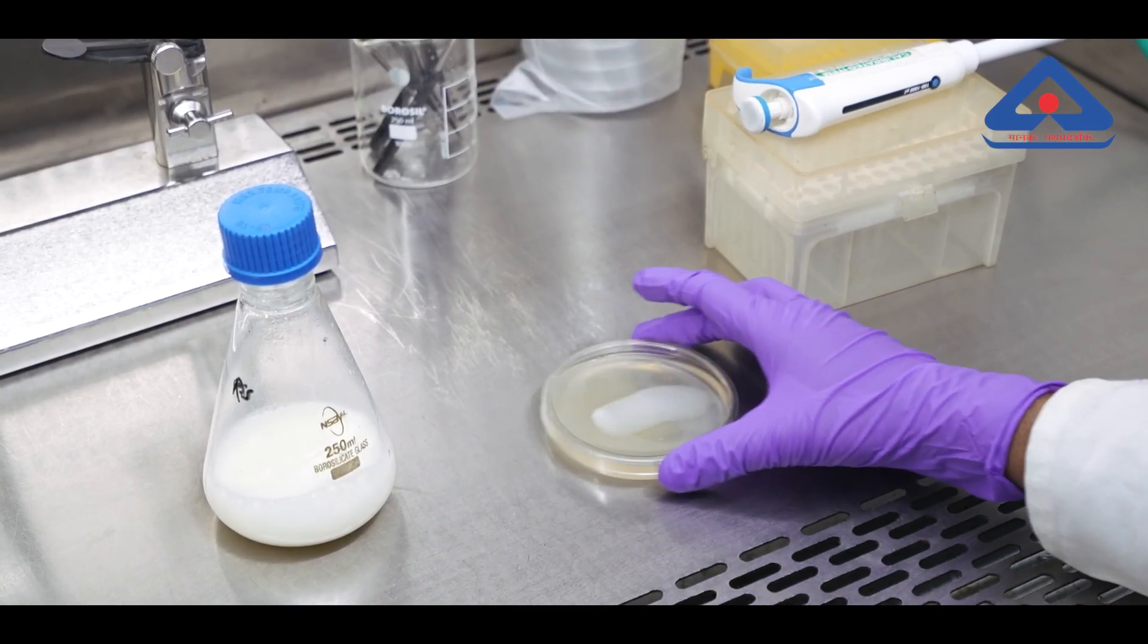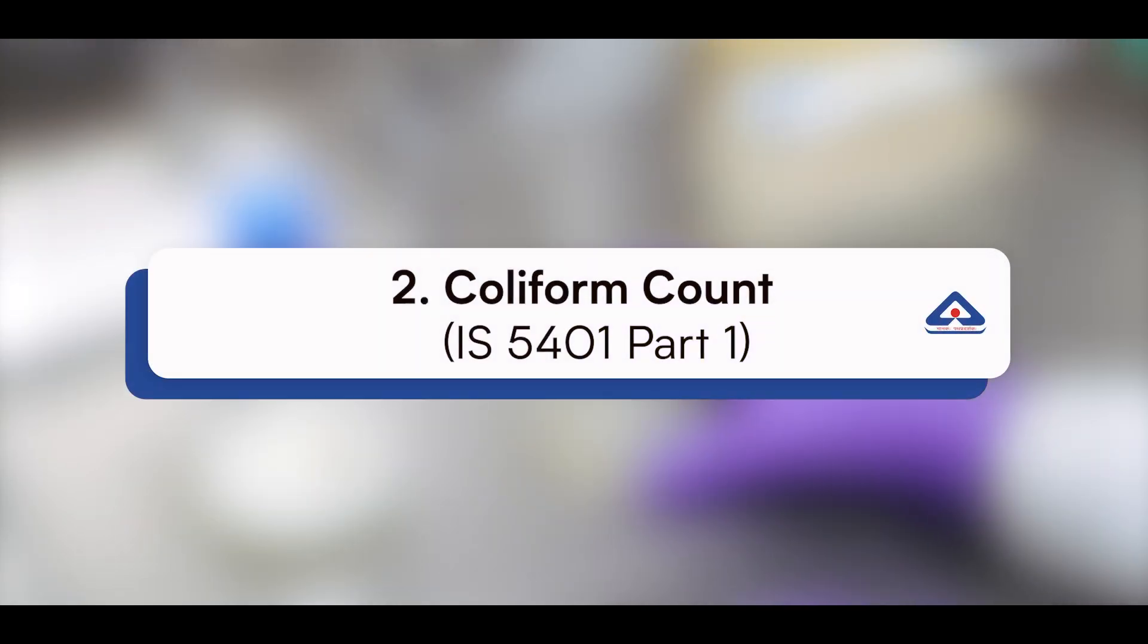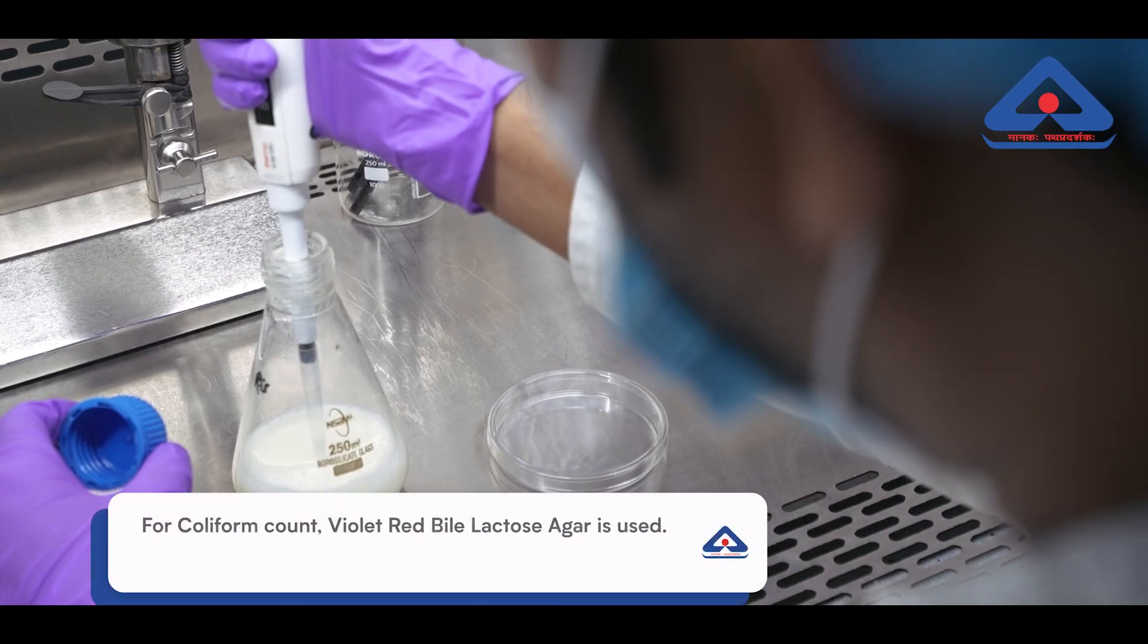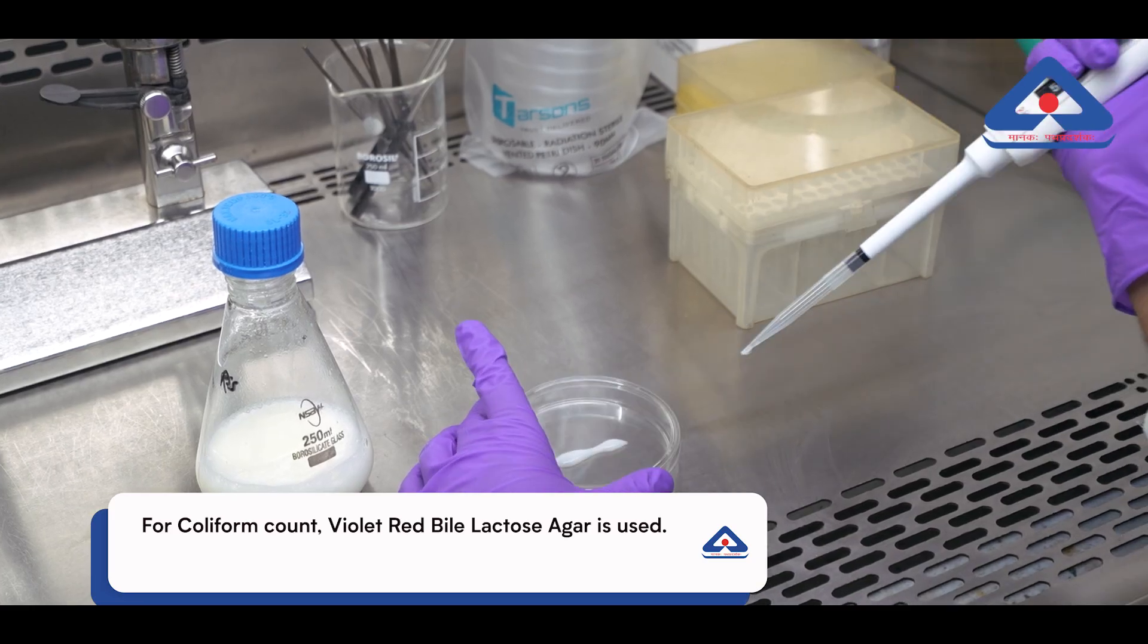Number two: Coliform count, IS 5401 part 1. Coliform count helps us identify bacteria that could indicate contamination, ensuring the powder is produced in clean conditions.